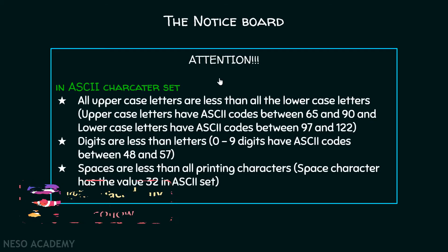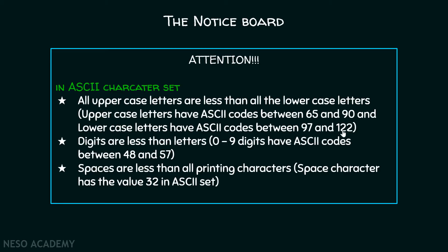Here are some important points about the ASCII character set. All uppercase letters are less than all lowercase letters. Uppercase letters have ASCII values between 65 and 90, while lowercase letters have ASCII values between 97 and 122. Digits 0 to 9 have ASCII values between 48 and 57, so digits are less than even the uppercase letters.